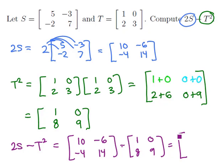So we'll take 10 minus 1 to get 9, -6 minus 0 to get -6, -4 minus 8 to get -12, and 14 minus 9 to get 5. And there's our combination.